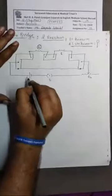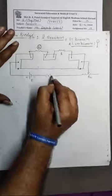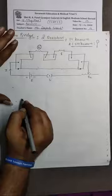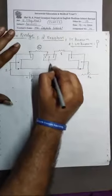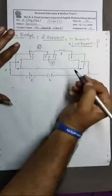As we press the key, electric current flows from the positive to the negative terminal of the battery. There is a galvanometer G used to detect the presence of electric current.